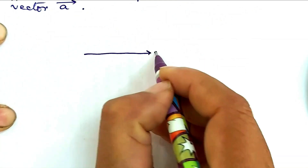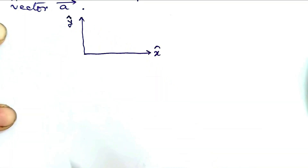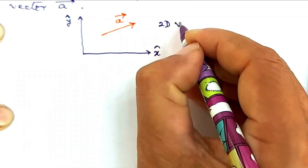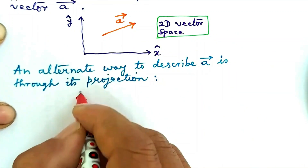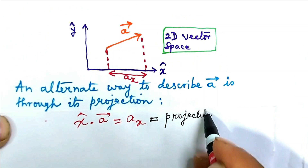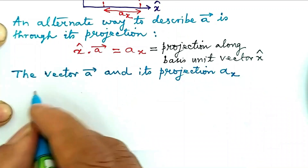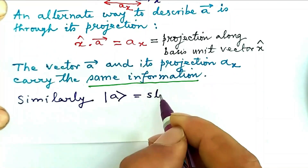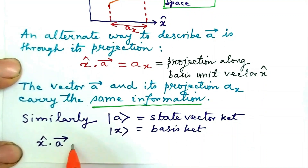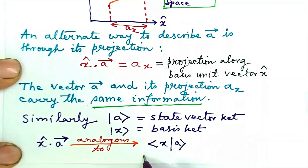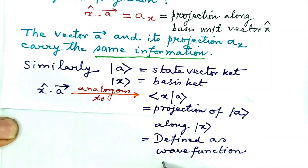Consider a 2D vector space with x-axis (basis unit vector x-cap) and y-axis (basis unit vector y-cap). For a vector A, an alternate way to describe it is through its projection x-cap·(vector A) = Ax, which is the projection of vector A along basis unit vector x-cap. Vector A and its projection Ax carry the same information. Similarly, ket A is the state vector, ket x is the basis ket, and x-cap·(vector A) is analogous to the inner product bra x ket A — the projection of ket A along ket x — defined as the wave function, written as a function of x.